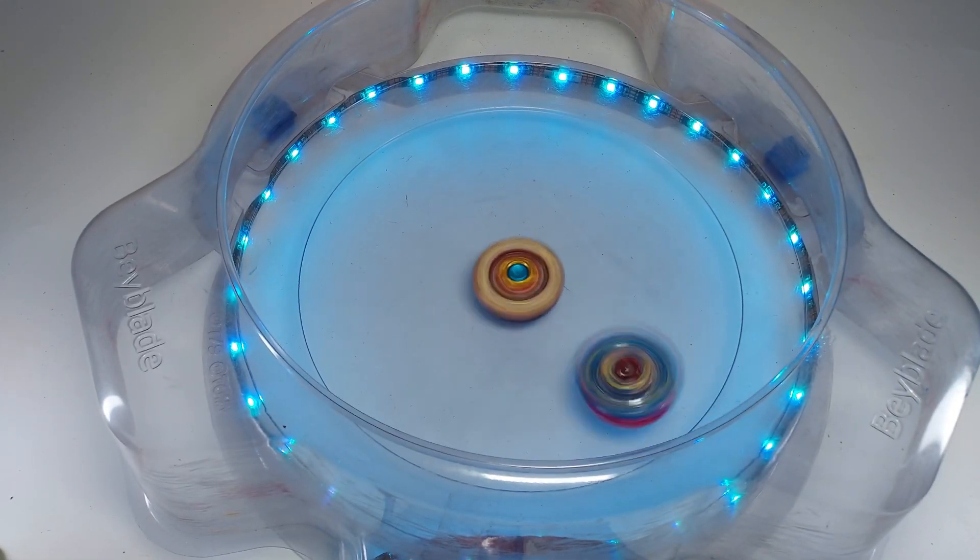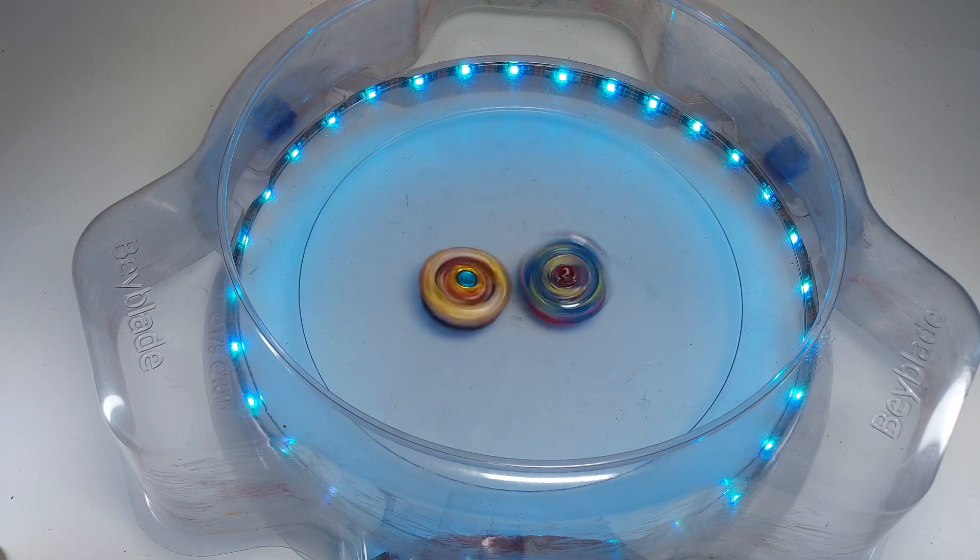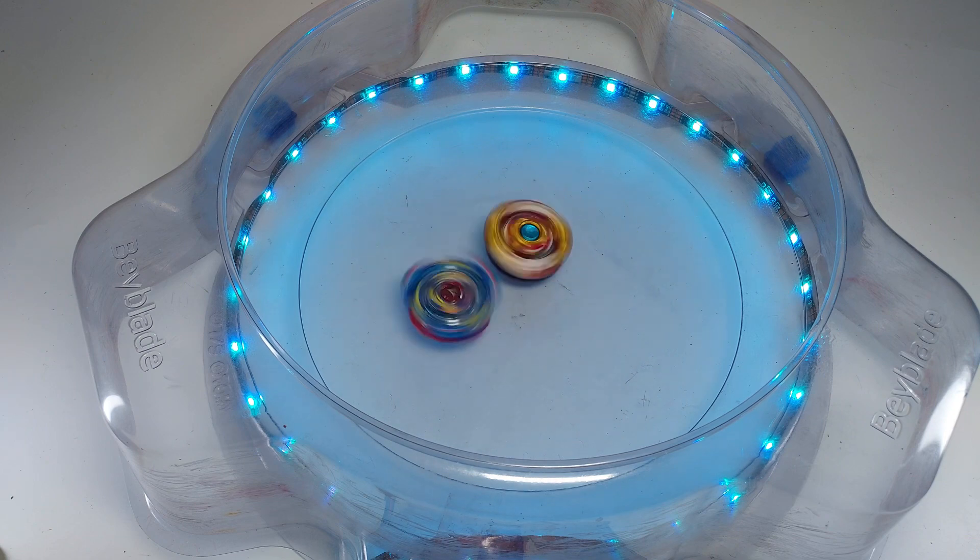Valkyrie lost its spin to Spriggan. It did good attacks but still wasn't able to knock out Requiem. Spriggan Requiem is really heavy.